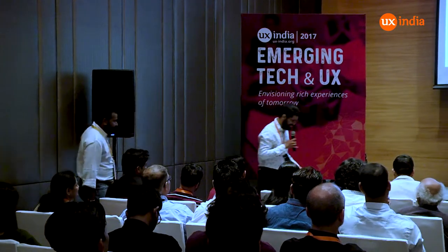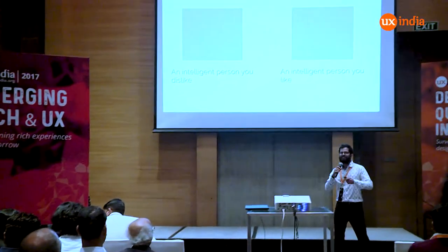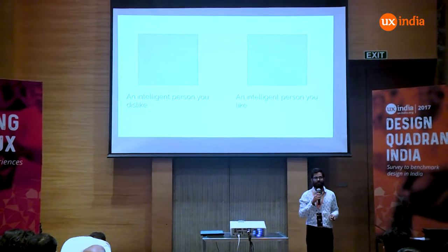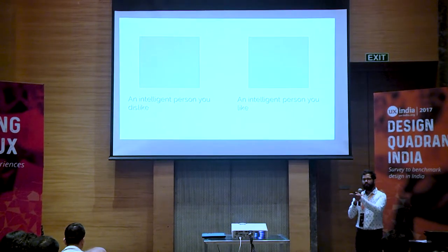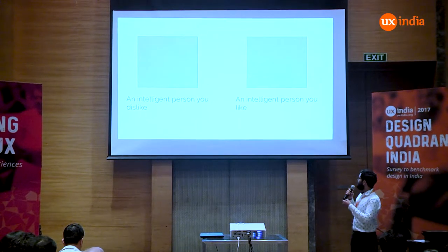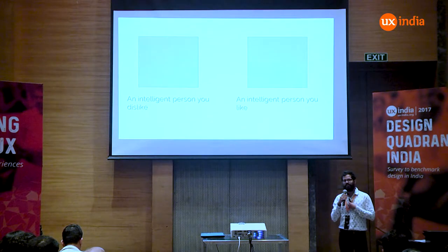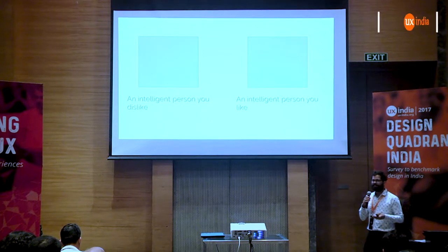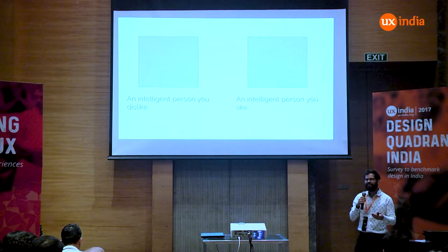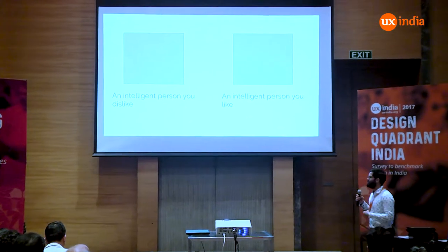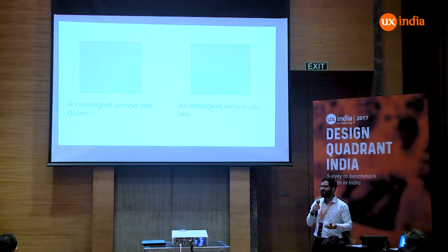Both fantastic answers. These are exactly the kind of insights that we got when we studied intelligent likeable people and intelligent people whom we dislike. The intelligent people whom we like try to understand us and make their intelligence work for us. The intelligent people whom we dislike are intelligent by themselves but don't make any effort to make their intelligence work for us — and in some cases they even make it work against us, so it turns into a confrontation.